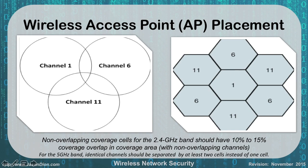For 5 GHz, identical channels should be separated by at least two cells of coverage instead of one. In the 2.4 GHz band we only have three usable channels — 1, 6, and 11 — but in the 5 GHz range there are channels from 1 to about 150 to choose from, so we want at least two cells of separation. For your Network+ exam, they'll keep it to 2.4 GHz: remember 1, 6, and 11, at least 10 to 15 percent overlap, and no two same-channel cells touching each other.